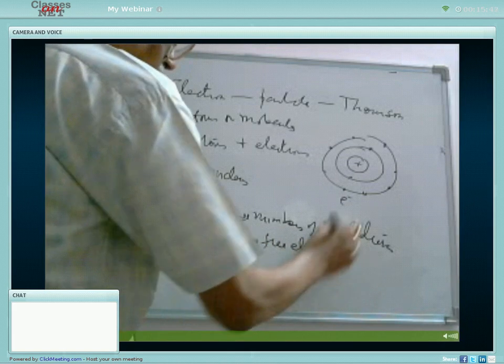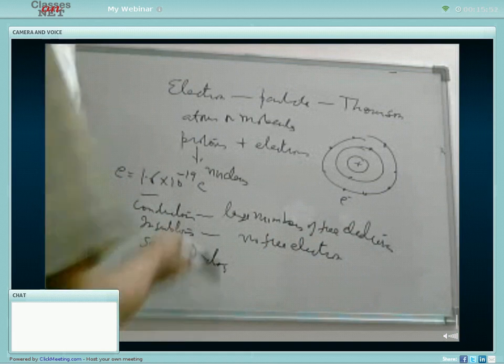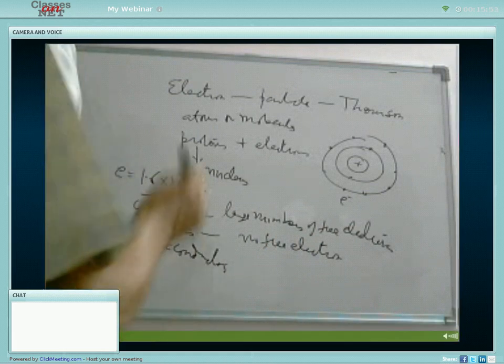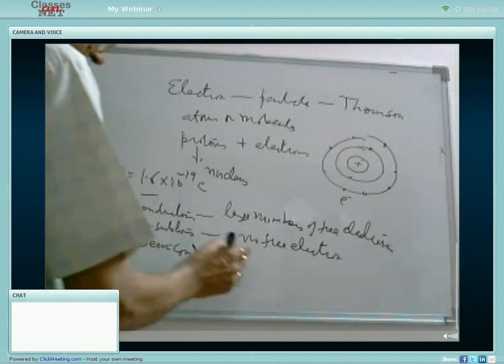Insulators have no free electrons. They do not conduct or flow of charges take place in insulators. The charge if given to insulator remains there at the same place where it is given.